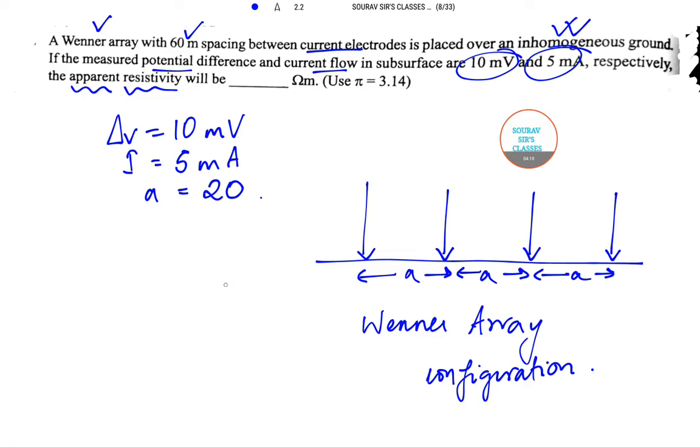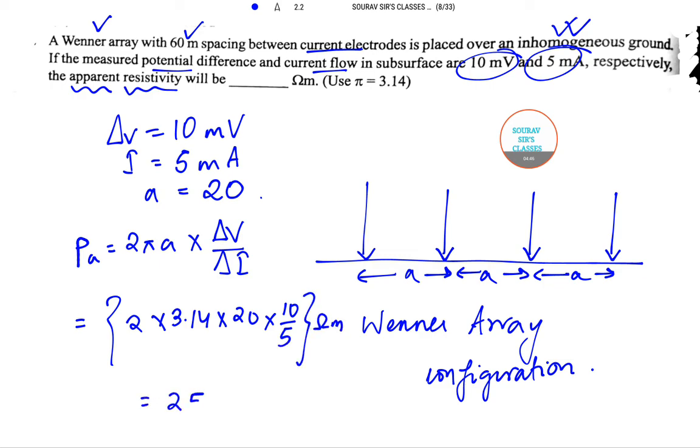So we actually have the apparent resistivity obtained for Wenner array configuration is given by this. So you have 2 pi A into delta V by delta I. You substitute all the values. You have 2 into 3.14 into 20 into 10 by 5. This will be the unit. So you will have answer as 251.2. So this will be the answer to this particular question.